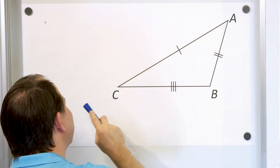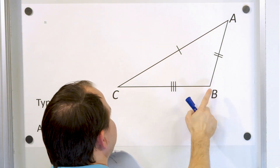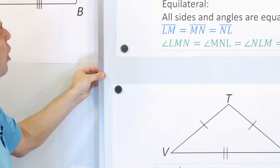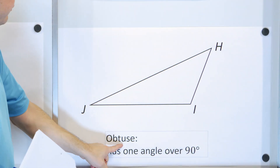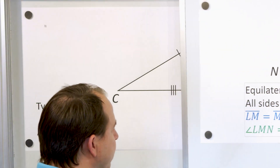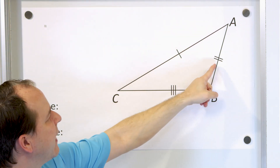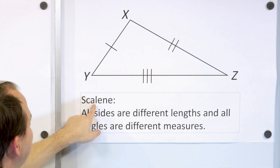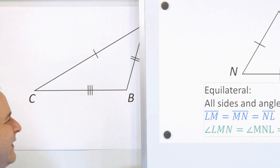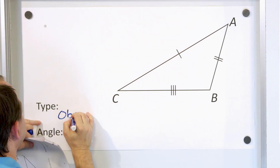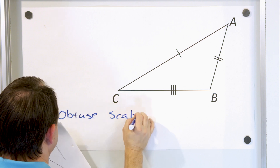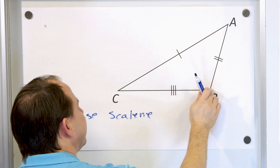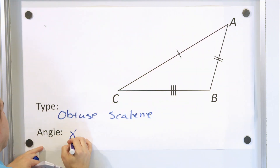Problem number three: what type of triangle is this? We see it's a laid-back triangle — this angle would be 90 degrees if straight up and down, but it's larger than that. So because one angle is larger than 90 degrees, this is an obtuse triangle. It also has three different side lengths, so it's a scalene triangle. Together, we call it an obtuse scalene triangle. The angle greater than 90 degrees is angle ABC.